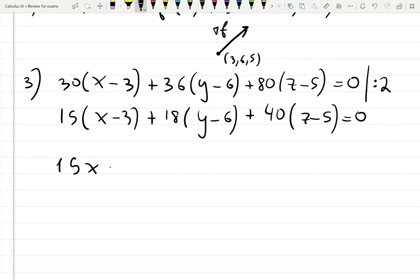Let's distribute: 15x minus 45 plus 18y minus 108 plus 40z minus 200 equals 0.